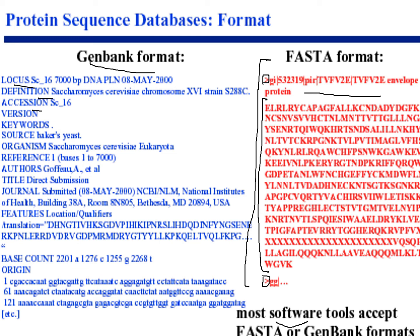One of the easiest ways to obtain sequences in FASTA format is through NCBI. Search for your desired organism, find the sequences, and click the 'FASTA' option at the top. You can then copy the sequence with Ctrl+C and paste it into the desired database or website to extract information.